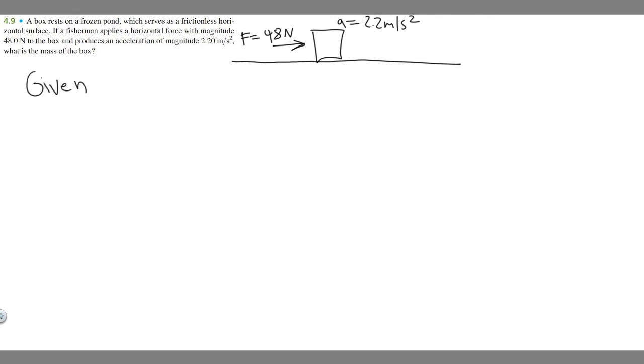Next, let's write out our given. So what are we told? We're told the force of the box, so force equals 48 newtons. We're told the acceleration, so a equals 2.2 meters per second squared.